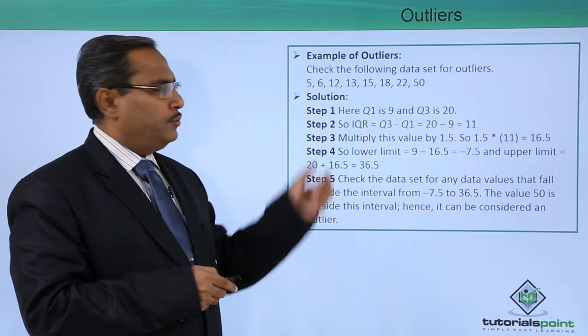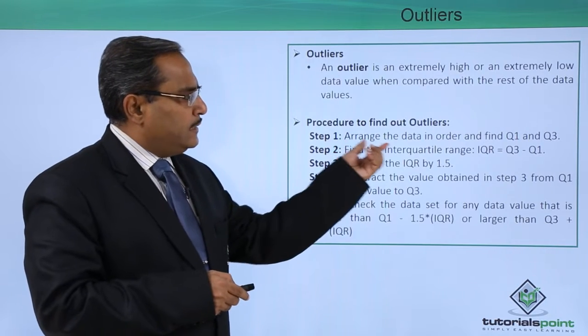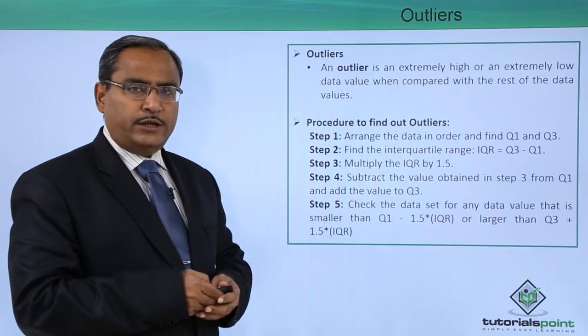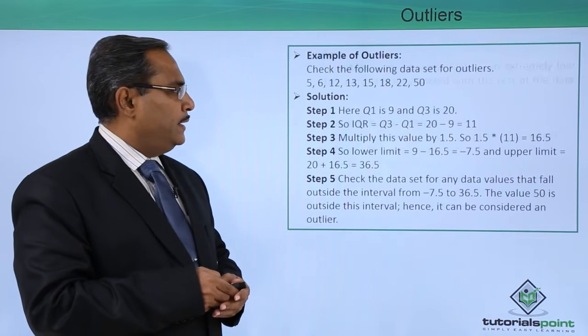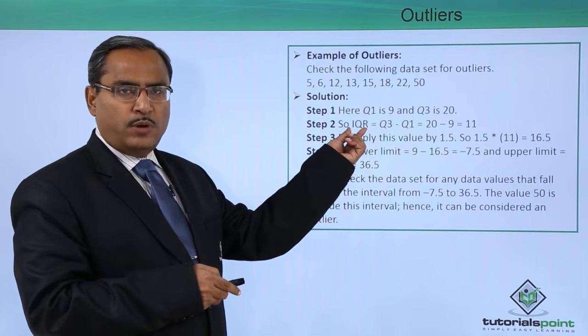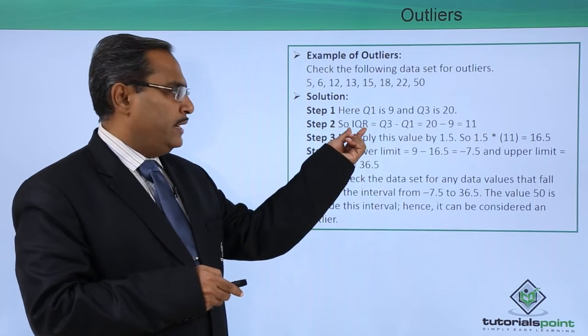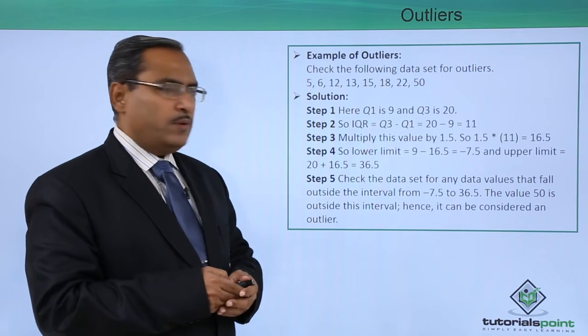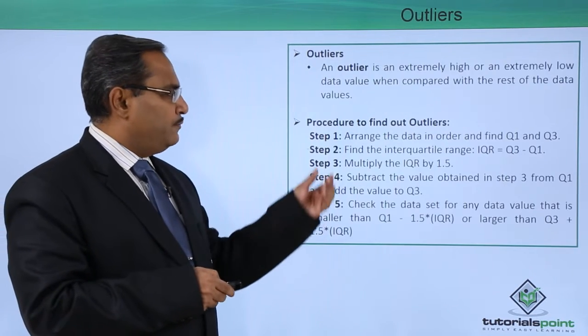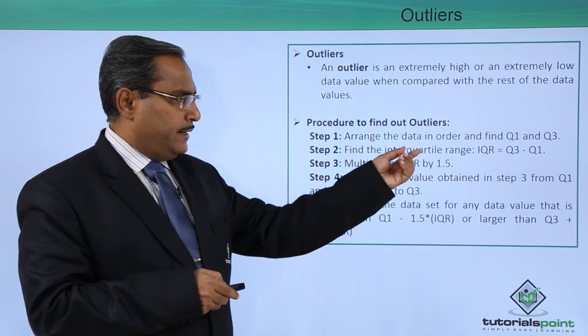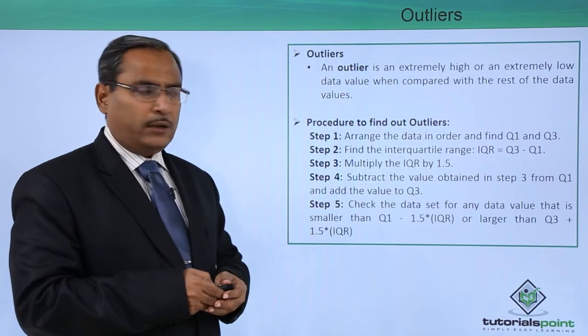That is step 1 we followed: arrange the data in order and find Q1 and Q3. We have covered that one. Next, we are going for the IQR, the interquartile range. That is Q3 minus Q1: 20 minus 9 is 11. We followed step 2; the interquartile range we have calculated.